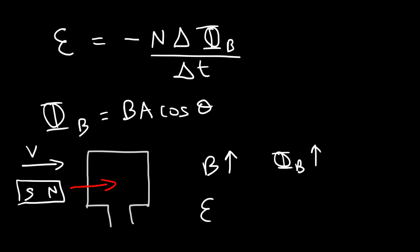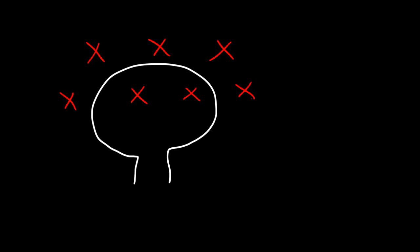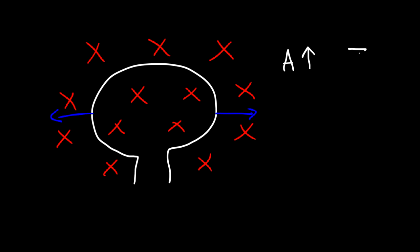So far we've seen one way to induce a current: moving a magnet into or out of a coil. The second way is to change the area of the coil. If we have a circular coil of wire with a constant magnetic field going into the page, and we pull the coil to increase its area, the magnetic flux will increase. Since the magnetic flux changes, this leads to an induced EMF and an induced current in the circuit.